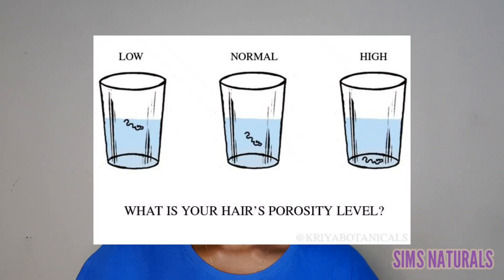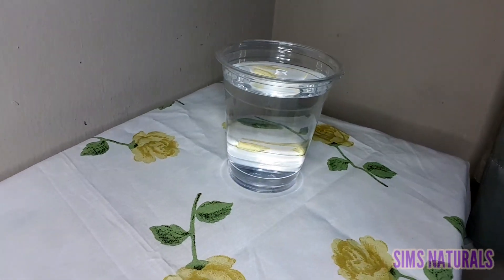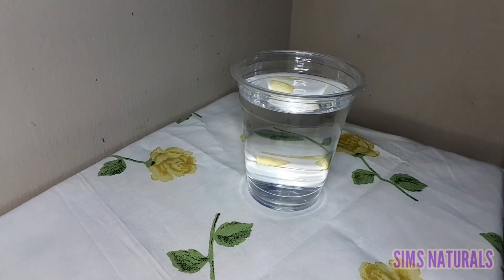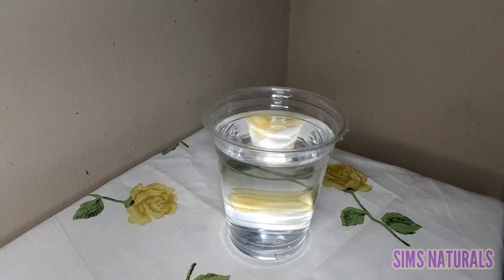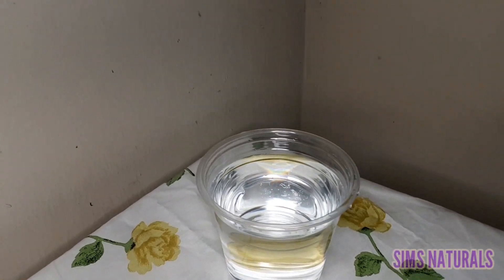Today I'll be showing you guys how to know your hair porosity level. There are three ways to know your hair porosity level. The first way is the cup method — we're going to put a strand of freshly washed hair into a cup of water, and we're going to be doing the cup test.